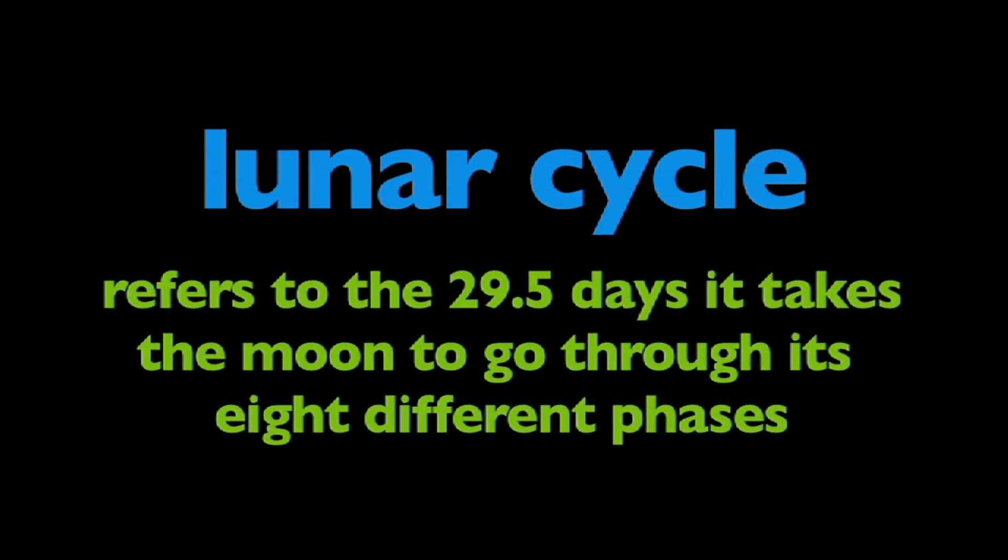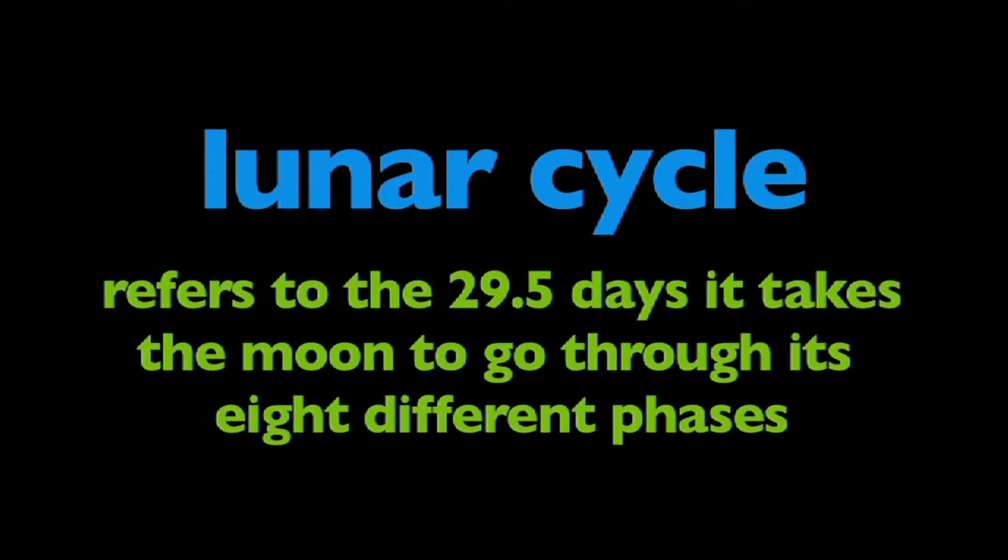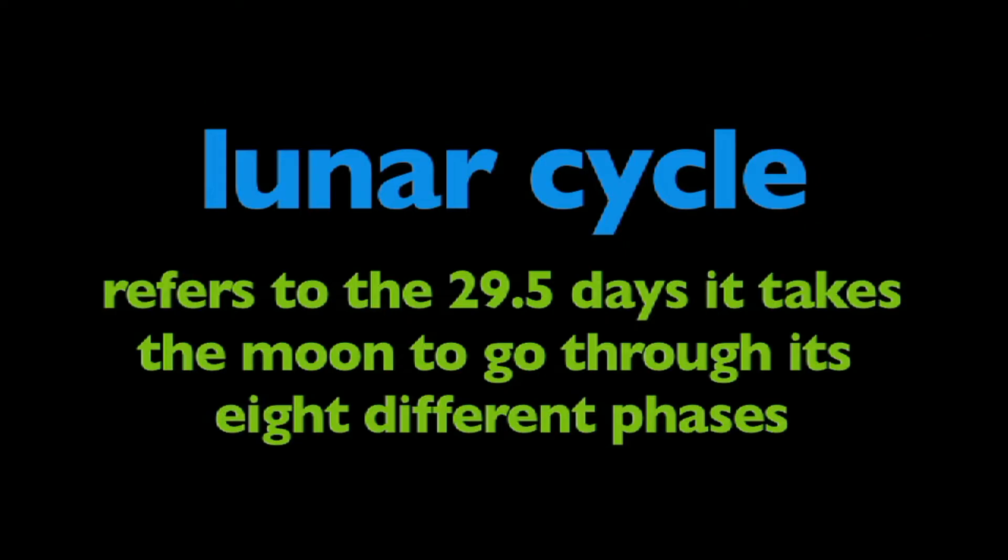The Lunar Cycle refers to the 29.5 days it takes the Moon to go through its 8 different phases.